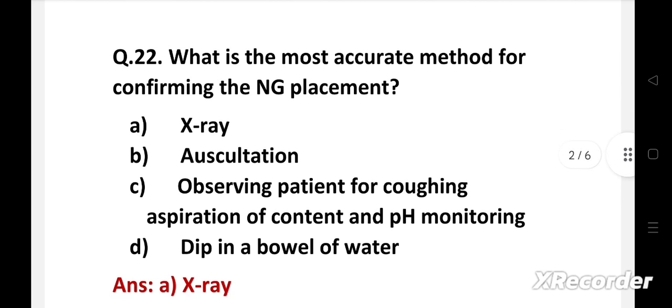Right answer is option A, X-ray. Nasogastric tube is a tube that is passed through the nose and down through the nasopharynx and esophagus into the stomach. It can be used to remove the contents of the stomach. Most accurate method for confirming the placement of NG tube is X-ray.